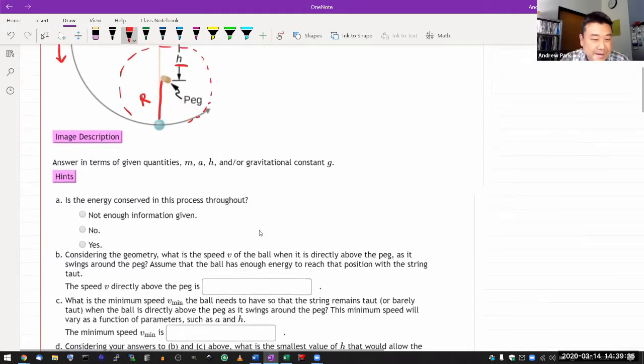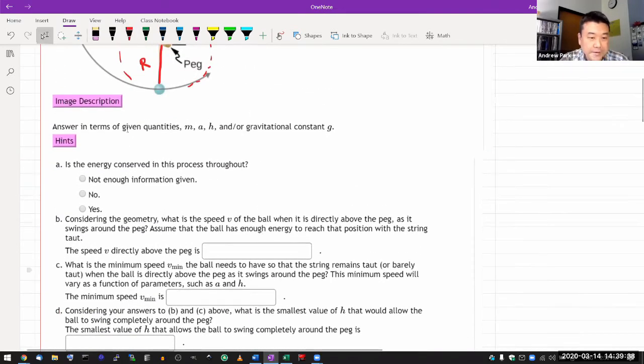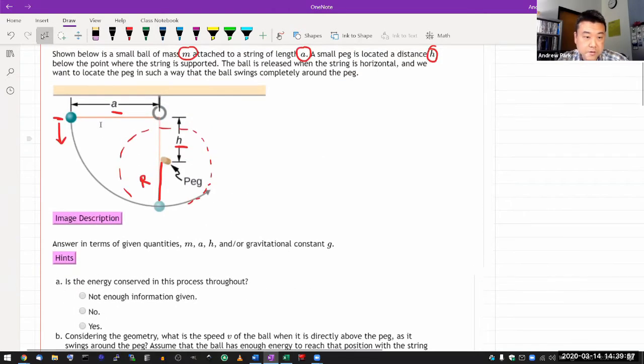The hint says, is the energy conserved in this process throughout? You should look at this picture, imagine this swinging happening, and then hopefully after enough thinking, you realize that energy is conserved. There's no part of the interaction where you would say there's friction on the ball or some sort of non-conservative force that's doing work that would force you to say energy is not conserved.